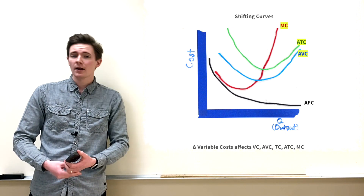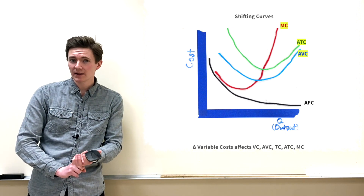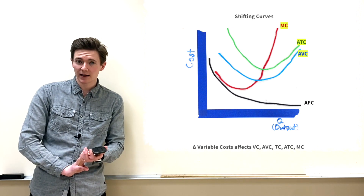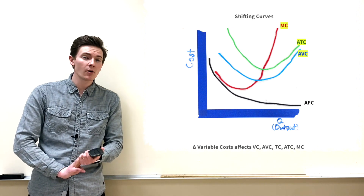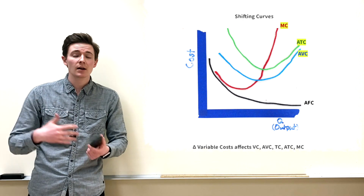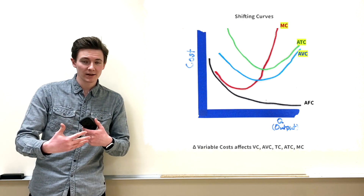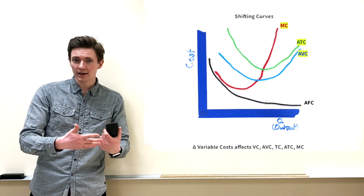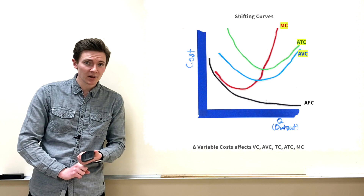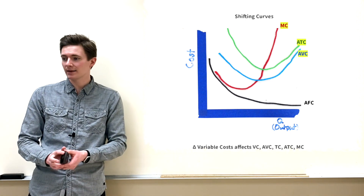So with a per-unit tax: variable cost, average variable cost, and marginal cost are all affected. And since variable costs contribute to total cost, total cost and average total cost will also be affected.